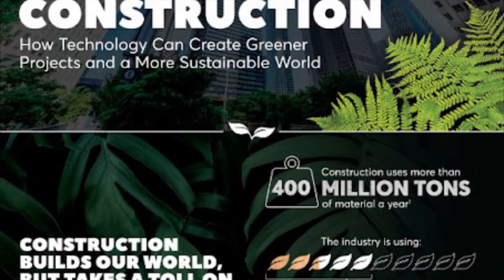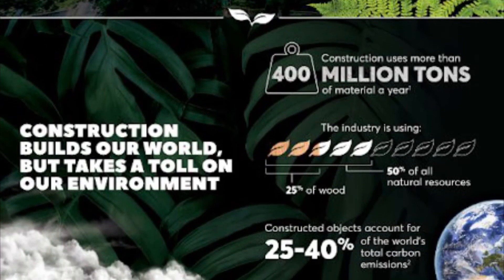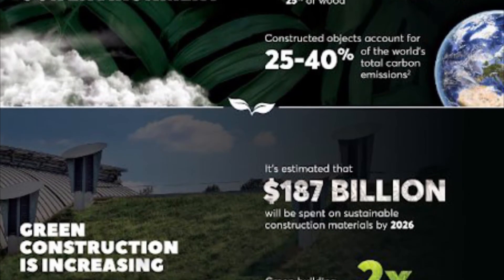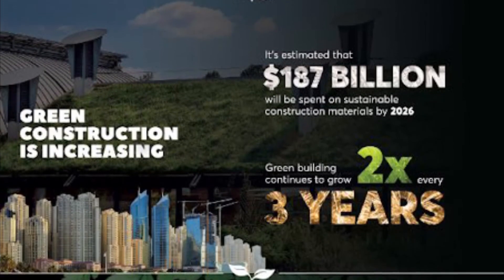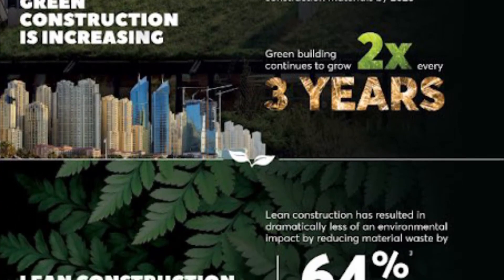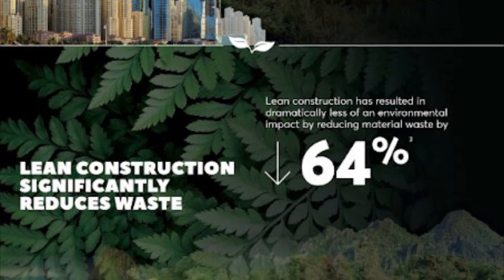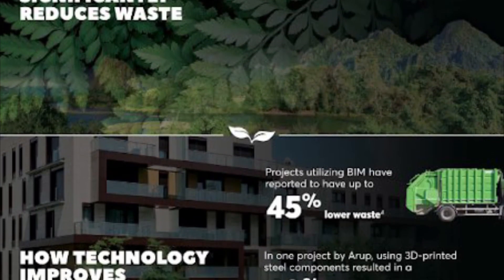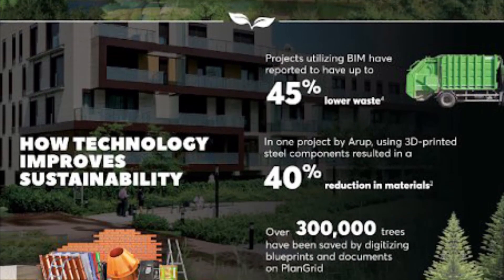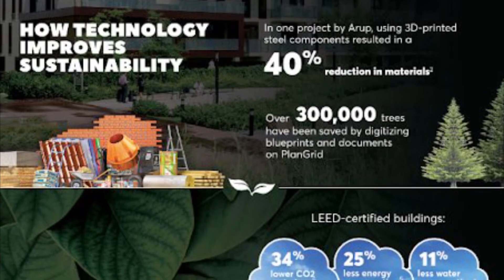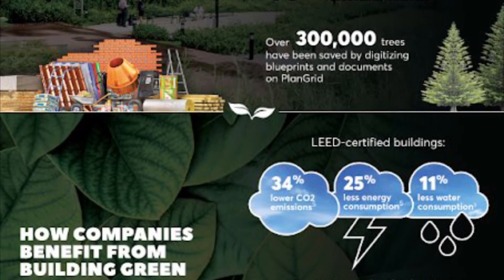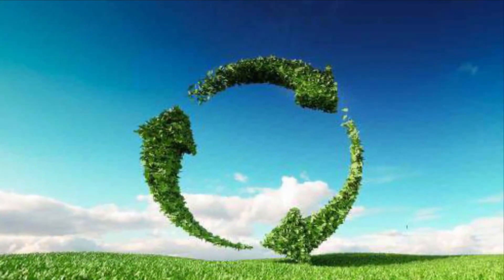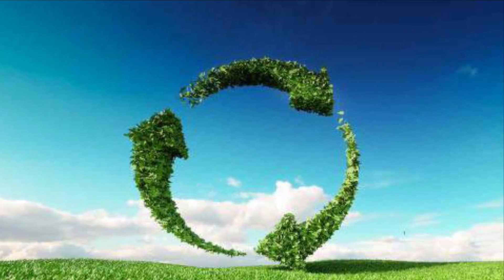Even though the construction industry over the years has had negative impacts on our environment, year after year they continue to strive to be more environmentally conscientious. I wish to implement practices and procedures that will have a positive impact on our environment and allow us to be better stewards of the land. These practices will consist of reducing, reusing, and recycling construction and demolition materials within every construction project. For more information on how you can help reduce environmental impacts, check out this infographic from the Construction Productivity Blog, sponsored by PlanGrid.